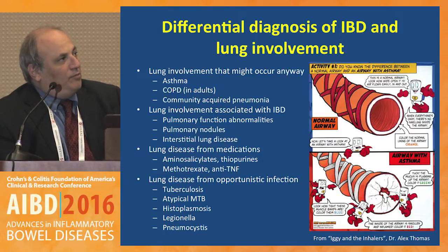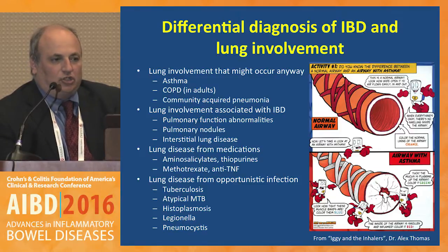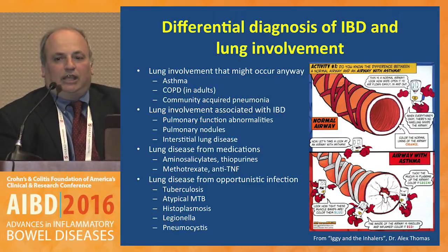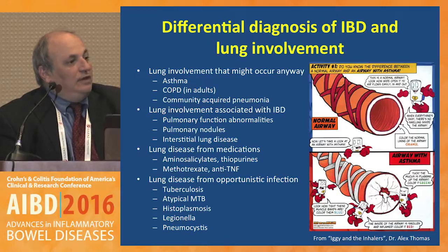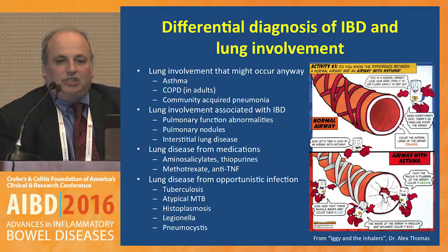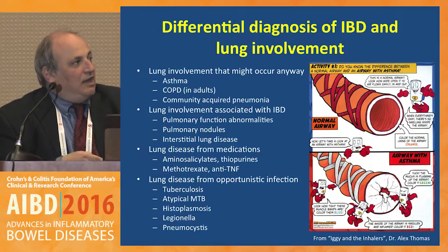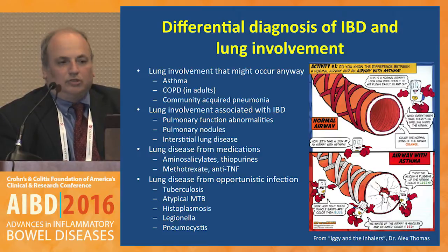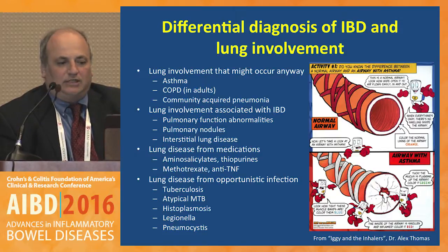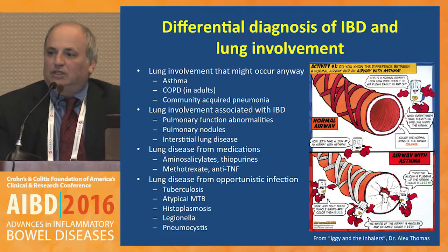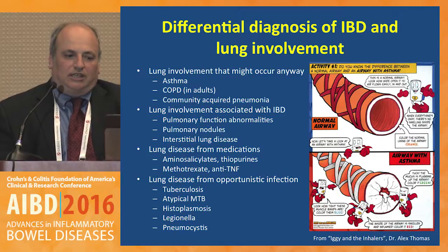I'm going to review pulmonary function abnormalities, pulmonary nodules, and interstitial lung disease, which can be complications of IBD itself. Lung disease from medications is another category - aminosalicylates, thiopurines, and methotrexate can all cause interstitial pneumonitis. The most feared group of problems are lung diseases from opportunistic infections, including tuberculosis, atypical MTB, histoplasmosis, Legionella, and Pneumocystis.